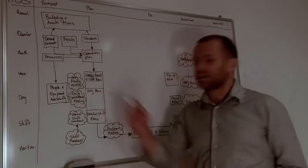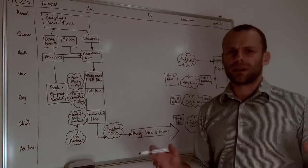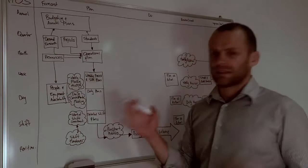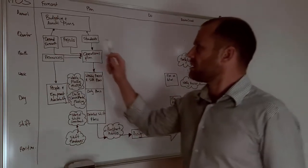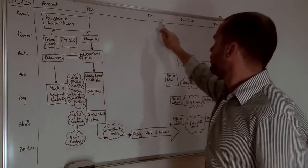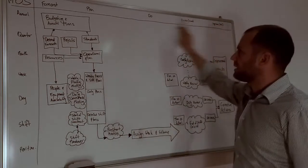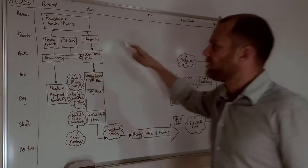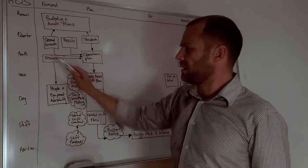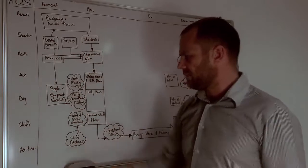Hi, my name's Paul Moyner and today I'm going to talk to you about a management operating system. I've drawn it up here on the board and basically the process is that we start here with forecasting, planning, do, reviewing and improving. So that follows the plan, do, check, act cycle and we can do that in a business annually, quarterly, monthly, weekly, daily, shiftly and real time.